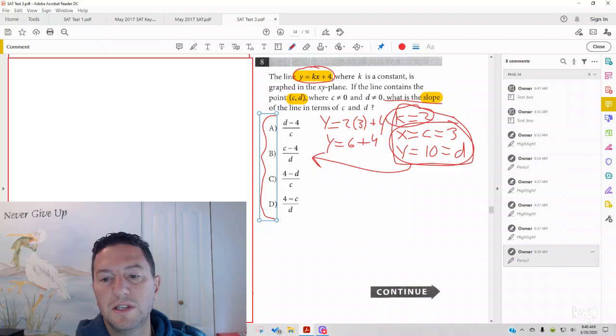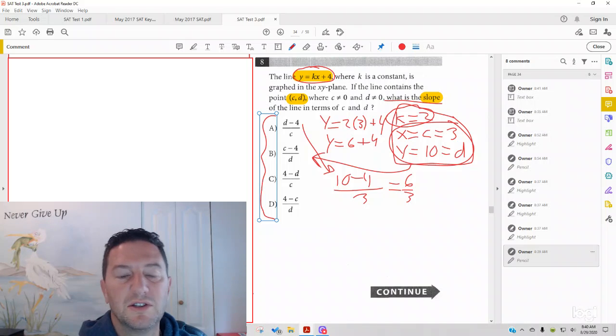And in answer choice a, d is 10. So it's 10 minus 4. This is answer choice a. 10 minus 4 over c. And our c is 3. And you can see that gives us 6 over 3, which again is 2.